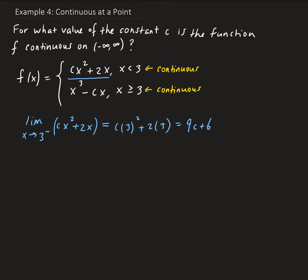Now let's look at the right hand limit. As X approaches 3 from the right side, that means X is greater than 3, so we use this expression. We have the limit of X cubed minus CX as X approaches 3 from the right. Evaluating this by letting X equal 3, we get 3 cubed minus 3C, which gives us 27 minus 3C.